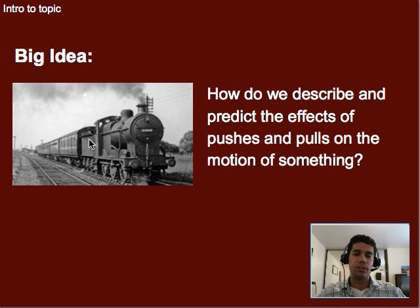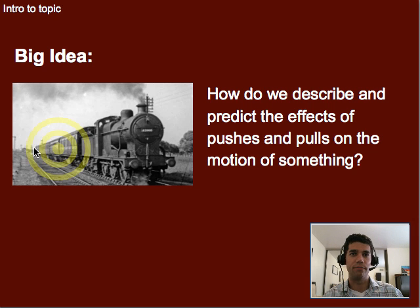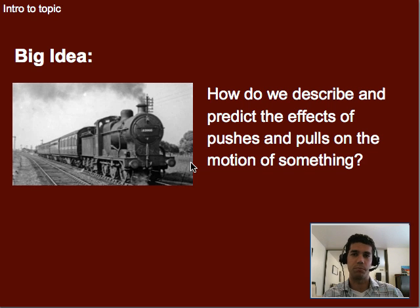We introduced last time the idea of how do we describe and predict the effects of pushes and pulls on motion. Meaning if we have this train here, and that train happens to be a certain size engine or strength of engine, can we predict how fast it can pull five cars like we have back here, or maybe what happens if you put ten cars on. So really this idea of predicting the effects of a certain strength of push on motion — is it going to go fast, slow, how fast, or how slow?